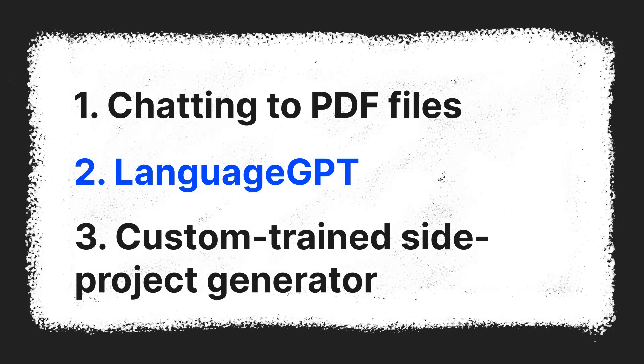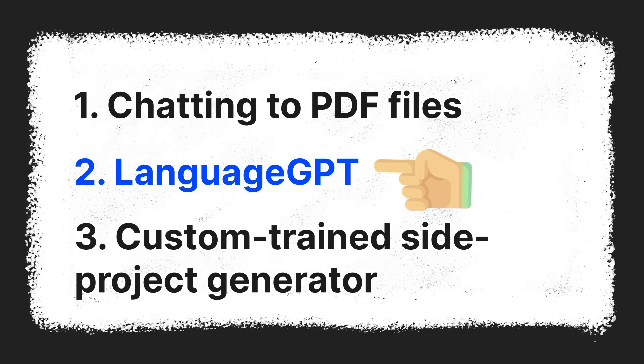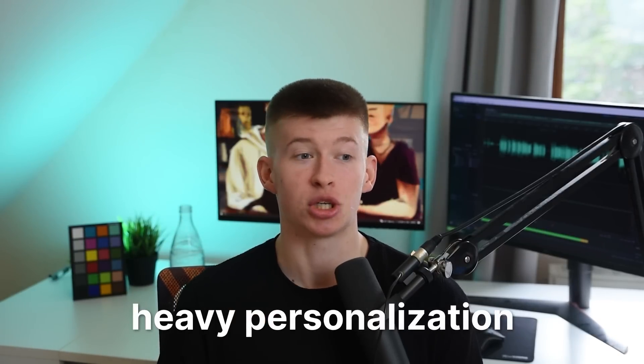Idea number two is a language learning service. That is pretty generic — there are a lot of those, like Duolingo, that do a great job. So what can we do better? Well, first, because there are a lot of services, it means there's huge demand for learning languages — that's important when building a SaaS app. And secondly, for the app we're building, we're going to rely on heavy personalization. That is the advanced aspect of this idea.